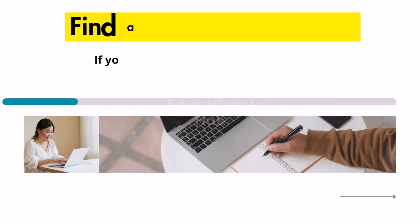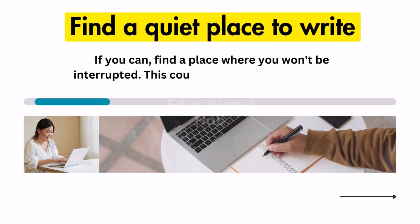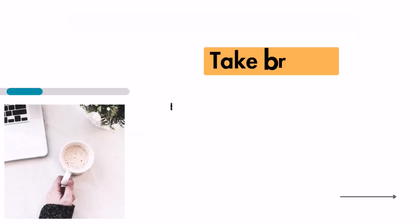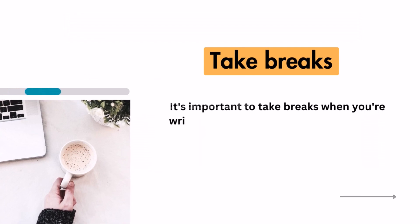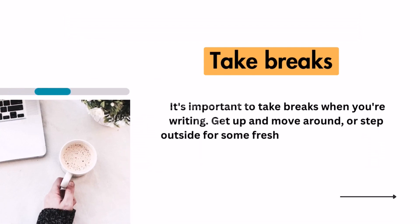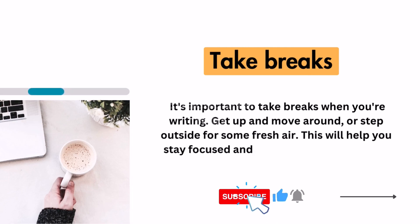Tip 9: Find a quiet place to write. If you can, find a place where you won't be interrupted — this could be your office, a library, or even a coffee shop. Tip 10: Take breaks. It's important to take breaks when you're writing. Get up and move around, or step outside for some fresh air. This will help you stay focused and avoid getting burned out.